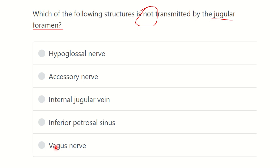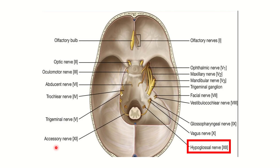We have to find out which structure does not pass through the jugular foramen. Here we can see this is the posterior cranial fossa of the skull base. This is the hypoglossal canal, and above the hypoglossal canal there is the jugular foramen.